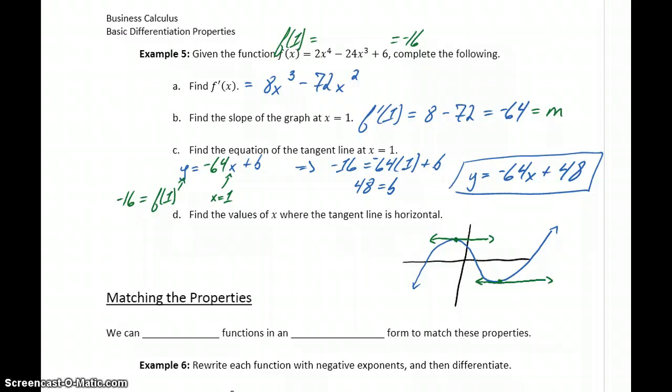So to find where our tangent line is horizontal means we want to find where is the rate of change equal to 0. So we want to take our derivative function and set it equal to 0, meaning 8x cubed minus 72x squared needs to be set equal to 0. We can factor out an 8x squared, leaving us with x minus 9, and then solving for x gives us two different values.